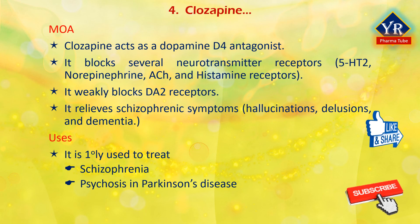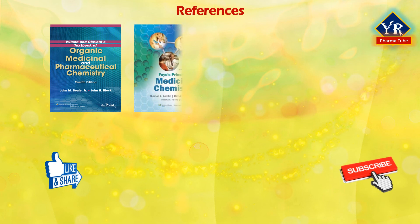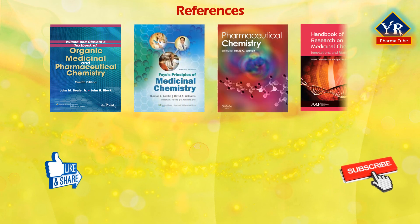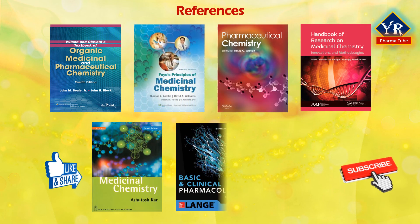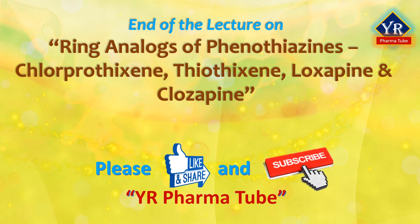Clozapine is also used for the treatment of psychosis in Parkinson's disease. That's all in this video on the ring analogues of phenothiazines. In the next lesson, we will discuss fluorobutyrophenones. Till then, never stop learning. Thank you for watching this video.